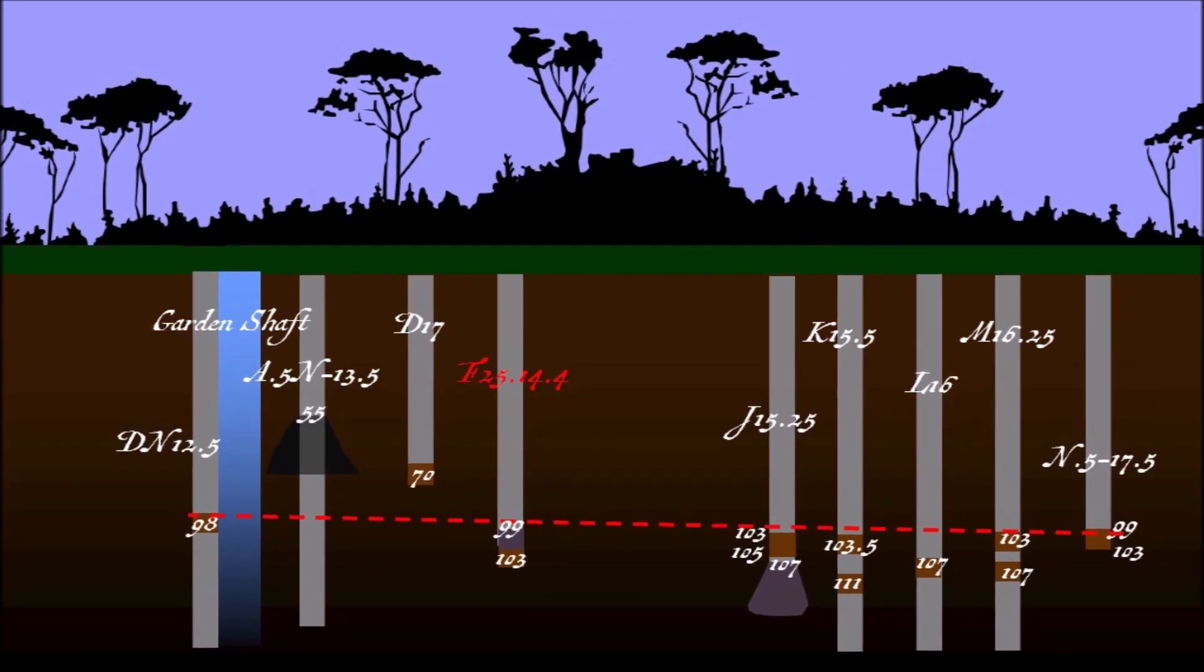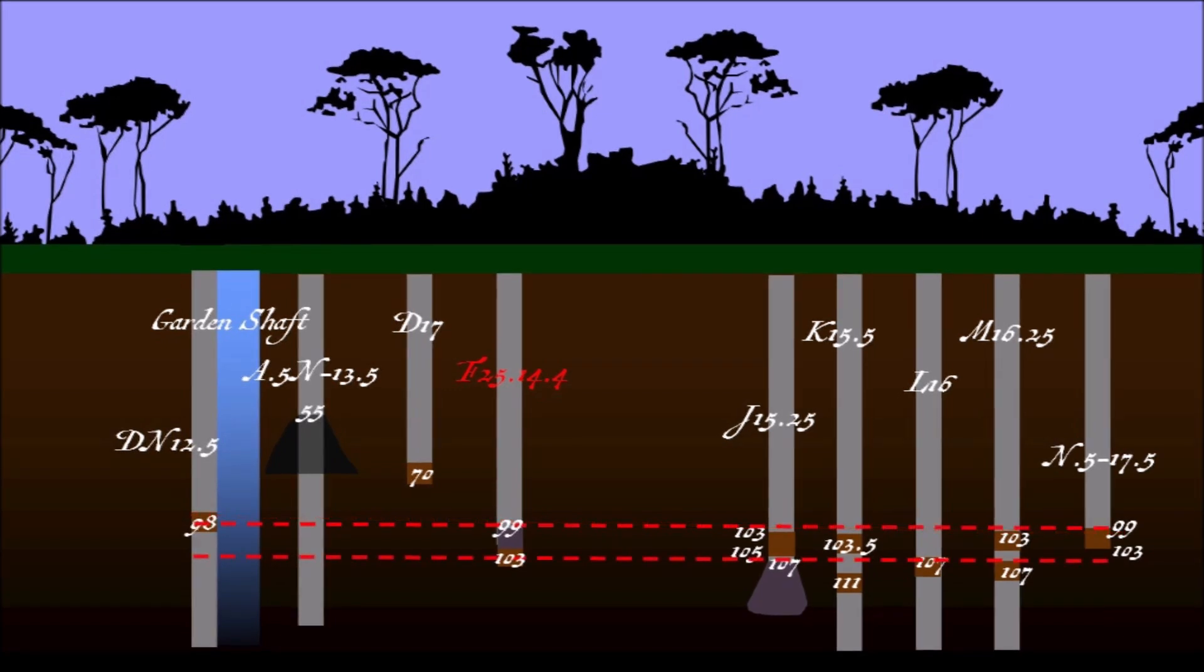Driller Mike Tedford tells the crew that his drill encountered a void between 99 and 103 feet, which Scott Barlow takes as an indication that the wood is the floor of the second tunnel which N.5-17.5 appears to intersect.